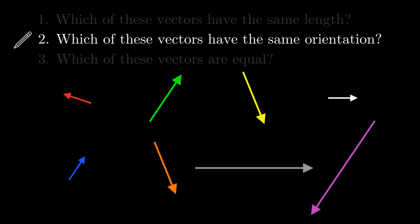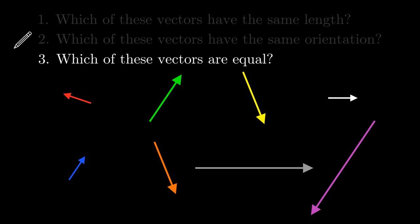Finally, which of these vectors are equal? This can be solved by looking back at the previous answers and seeing which vectors have the same length and orientation. If we do this, we see that only these two vectors are equal.